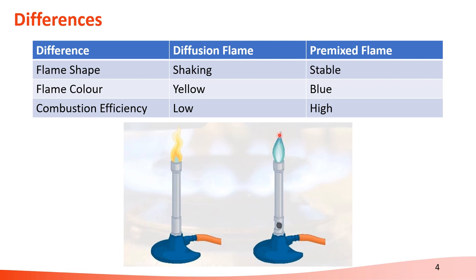Why is there a color difference between these two types of flame? It is because of the oxygen — I will tell you about this phenomenon in a later presentation. For combustion efficiency, the diffusion flame is relatively low, and the pre-mixed flame has relatively high combustion efficiency. When doing an experiment and you need to boil some water, the teacher will tell you to open the air collar to generate a pre-mixed flame, because the pre-mixed flame has higher combustion efficiency so it can boil the water faster.